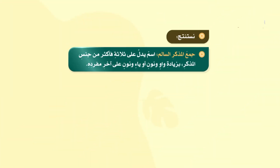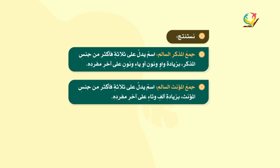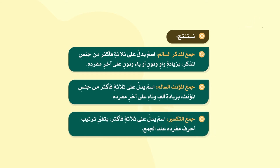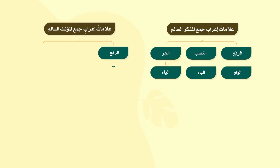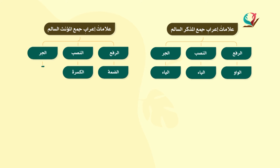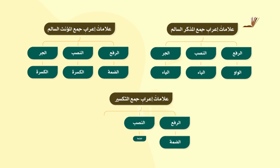نستنتج أعزائي الطلاب أن جمع المذكر السالم اسم يدل على ثلاثة فأكثر من جنس المذكر بزيادة واو ونون أو ياء ونون على آخر مفرده. وأن جمع المؤنث السالم اسم يدل على ثلاثة فأكثر من جنس المؤنث بزيادة ألف وتاء على آخر مفرده. وأن جمع التكسير اسم يدل على ثلاثة فأكثر بتغير ترتيب أحرف مفرده عند الجمع. وأن جمع المذكر السالم يُرفع بالواو وينصب بالياء ويُجر بالياء أيضاً، وأن جمع المؤنث السالم يُرفع بالضمة وينصب بالكسرة ويُجر بالكسرة، وأن جمع التكسير يُرفع بالضمة وينصب بالفتحة ويُجر بالكسرة.